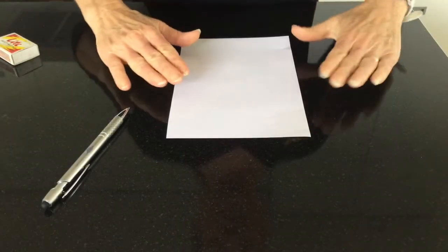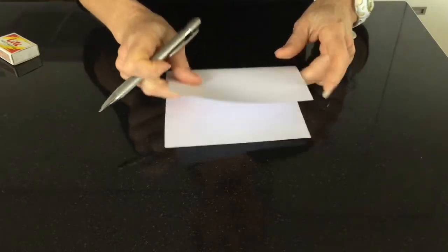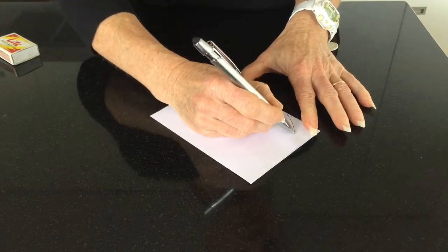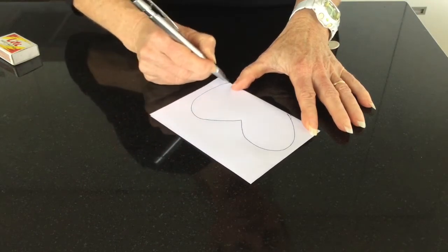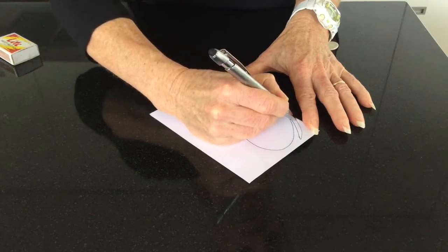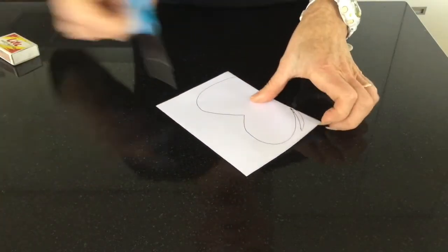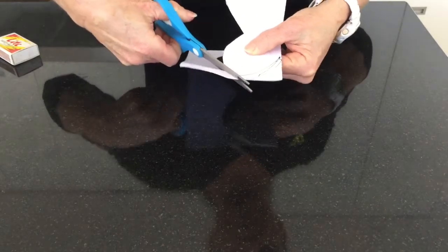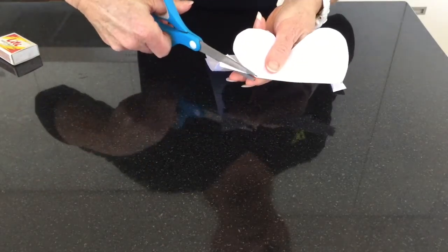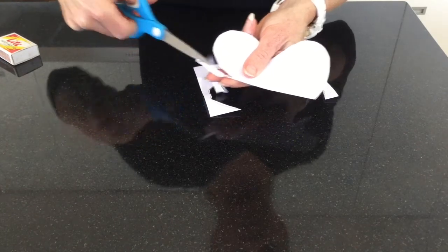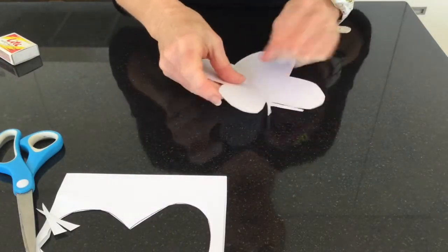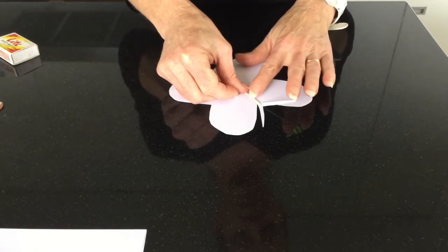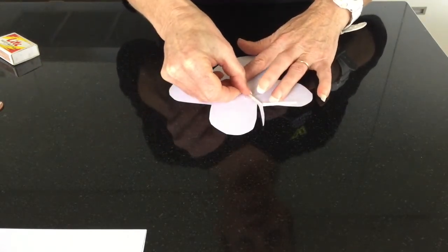For the next activity, take half a sheet of A4 paper, fold it over, and draw on it half a butterfly. Cut it out and open it out.